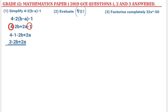Now let's go to question 2. Question 2 asks us to evaluate the 4th root of 81, raised to the power 3. Just like we did in the first question, we start by dealing with numbers in the brackets — always refer to BODMAS. When you see 81 with a 4 under the root sign, that means we need to find a number that we can multiply by itself 4 times to get 81.